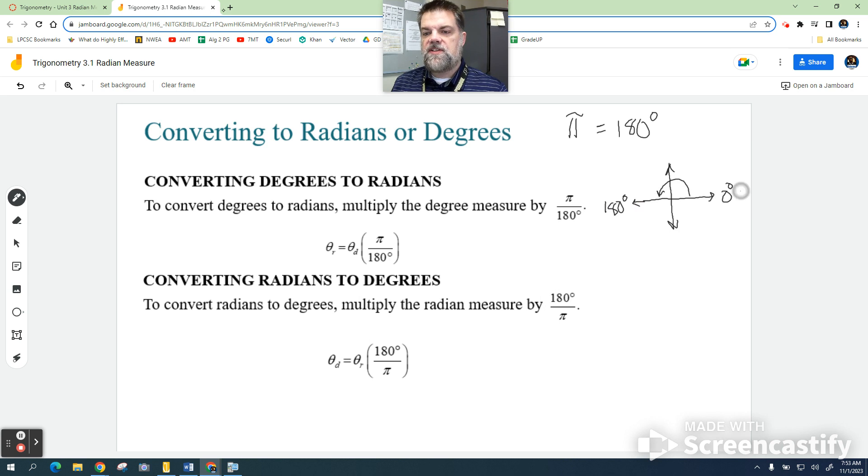But also, this is zero radians, and then over here is pi radians. So that's the relationship between degrees and radians.